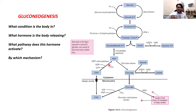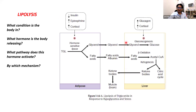Two things to remember about gluconeogenesis: it requires energy — for pyruvate to go back into glucose, you're using ATP and GTP. And you need a source of pyruvate to make glucose. So in starvation conditions, you need a source of pyruvate to make glucose.